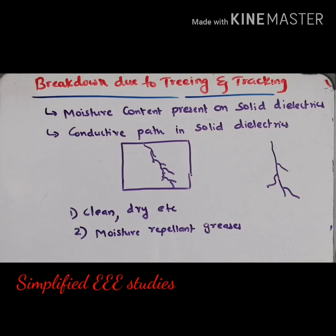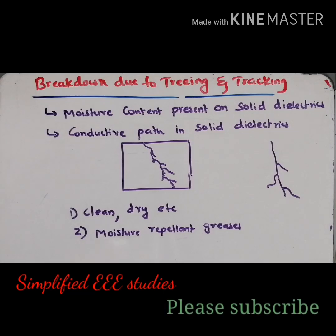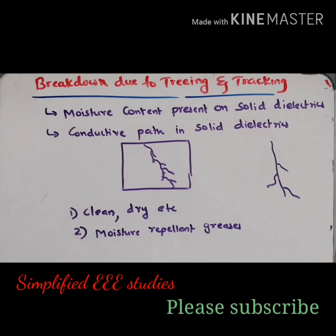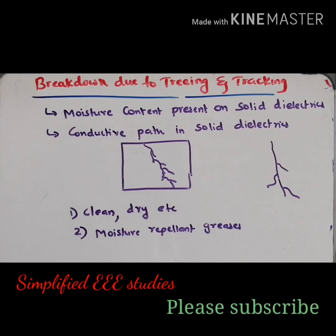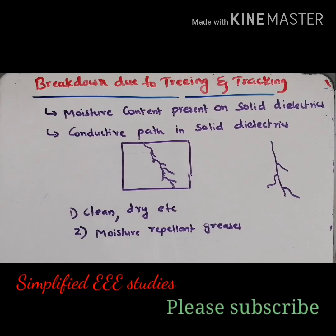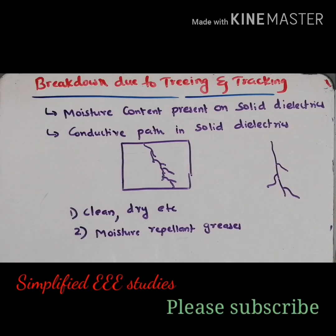To conclude the session: initially I explained the main reasons for the formation of treeing and tracking — mainly because of moisture content. Because of moisture content, slowly there will be formation of a conductive path inside the solid dielectric material. If a conductive path forms, the solid dielectric material is about to undergo breakdown, meaning its insulating property is getting damaged. To overcome treeing and tracking, keep the material clean and dry, and use moisture repellent greases to get rid of moisture content.